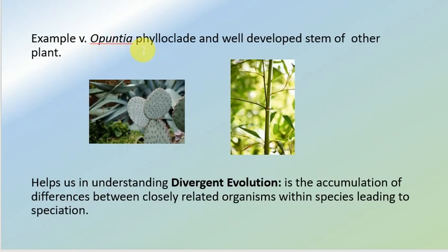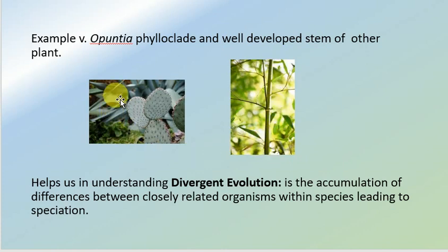Another example is the phylloclade of opuntia and the stem of other plants. Homologous organs perform different functions but have a similar origin. The phylloclade of opuntia performs the function of photosynthesis like leaves, while the stem of other plants supports aerial parts. These homologous organs help us understand divergent evolution.